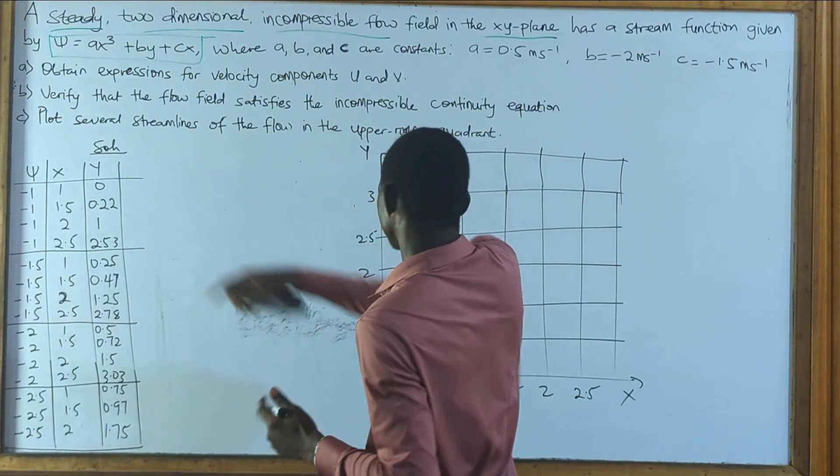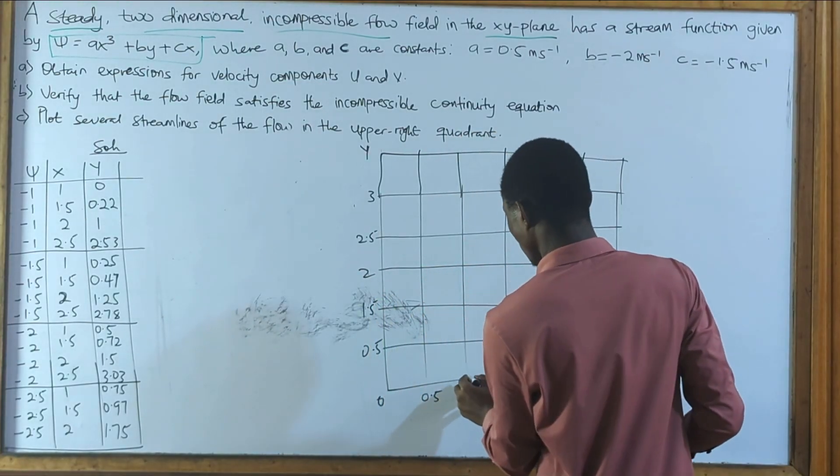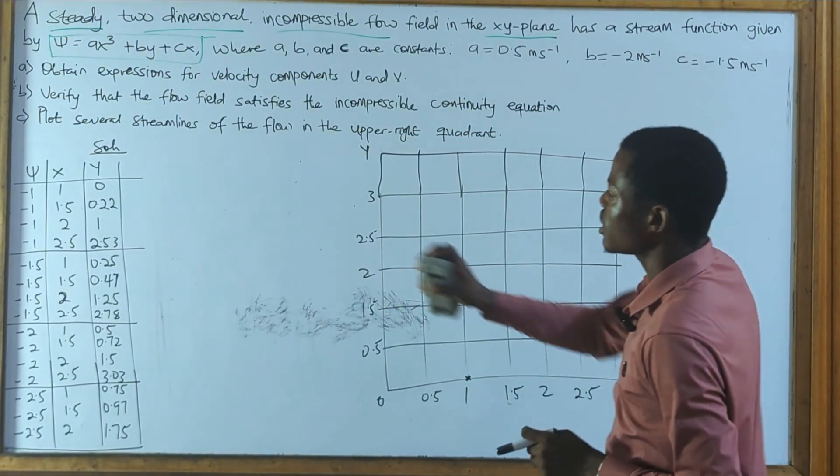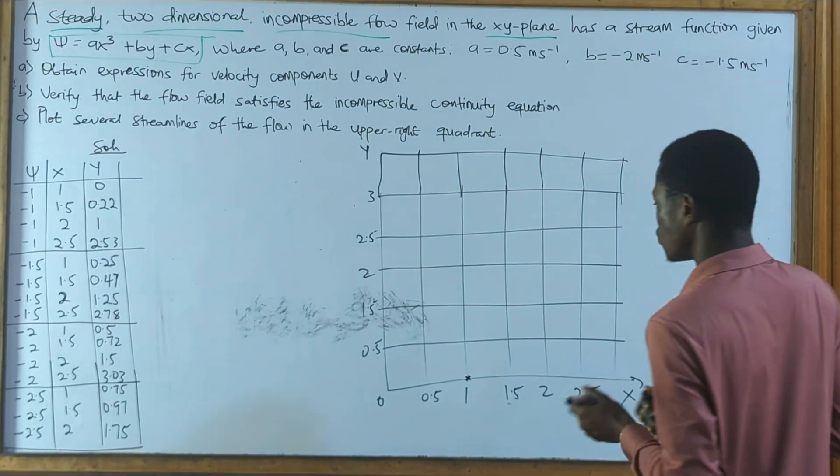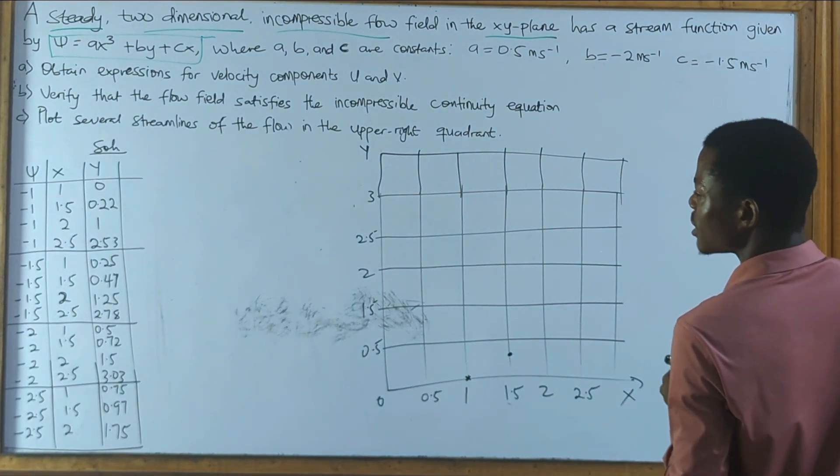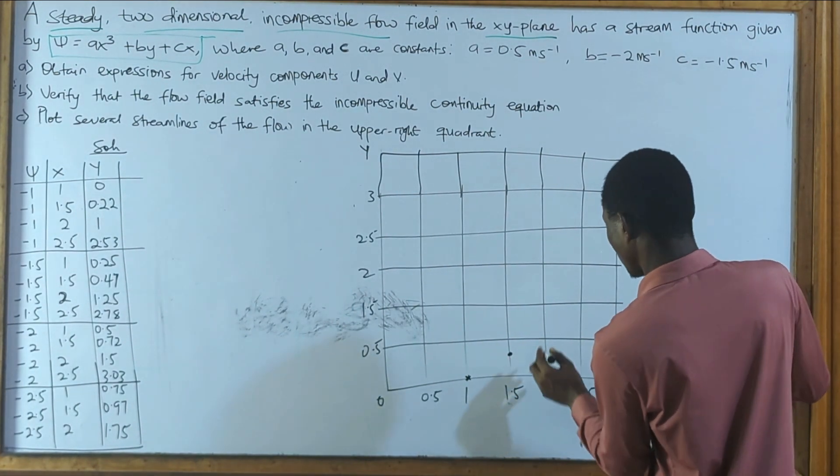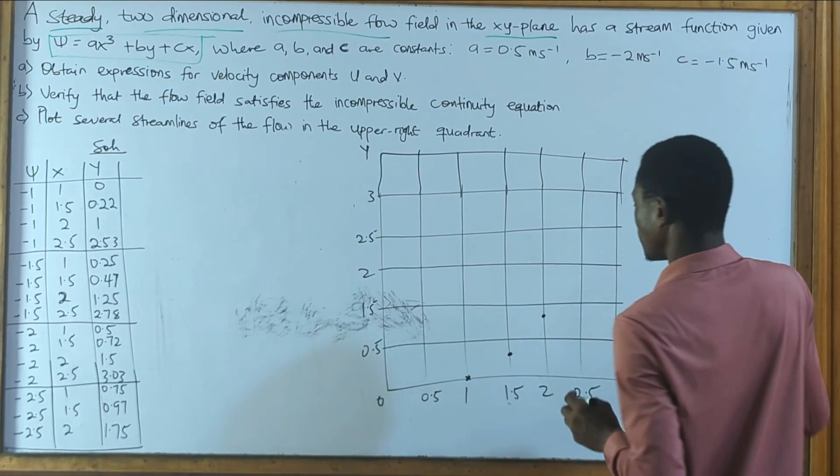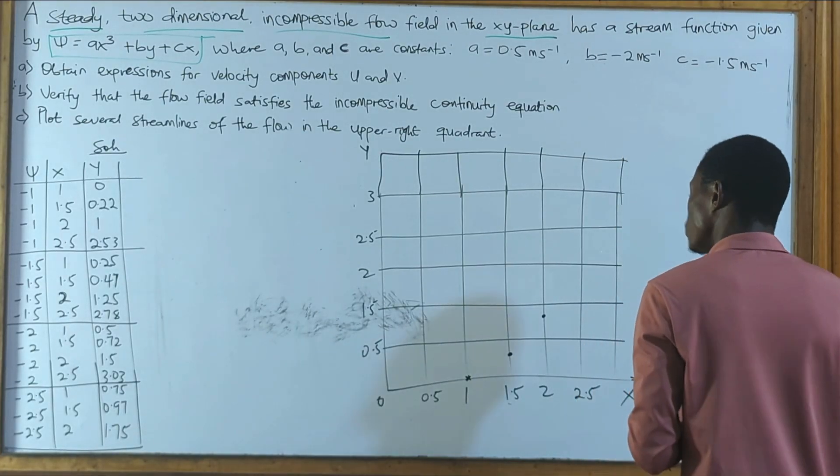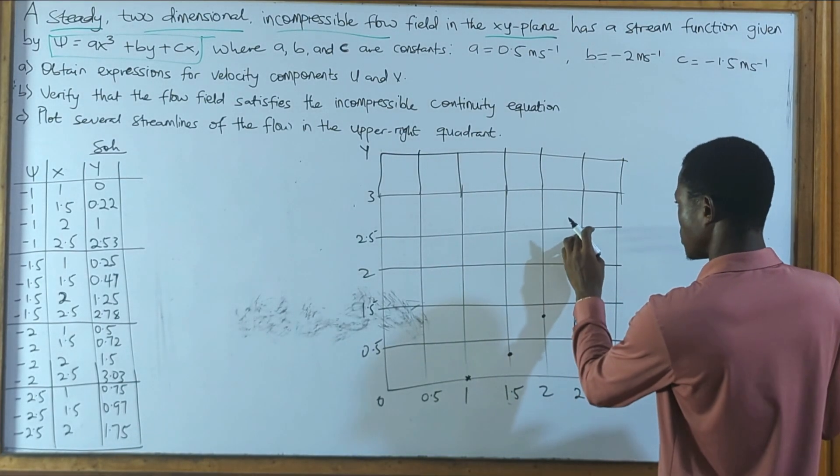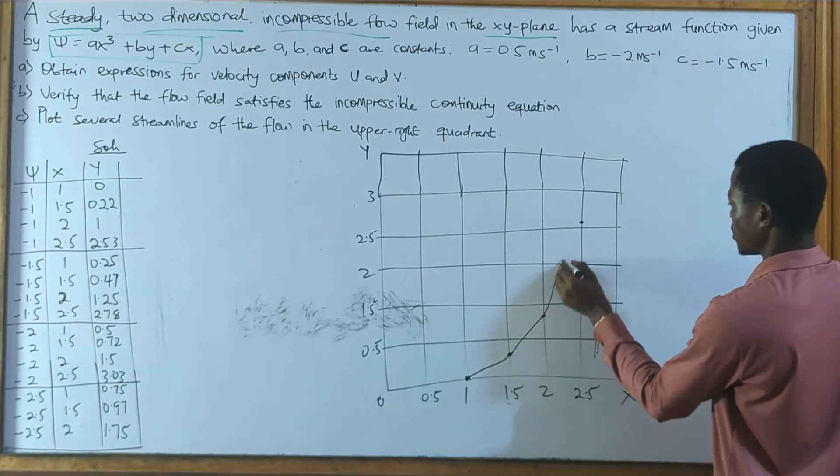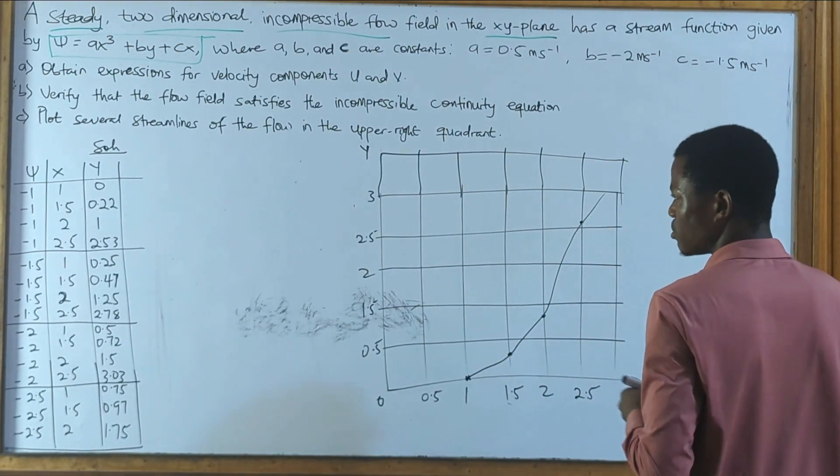So if x is 1, y is 0, so it will be on this line. And if x is 1.5, y is 0.2, so somewhere at the middle. And if x is 2, y is 1, so somewhere here. If x is 2.5, y is 2.53, so that's somewhere here. So this is my first streamline plot.